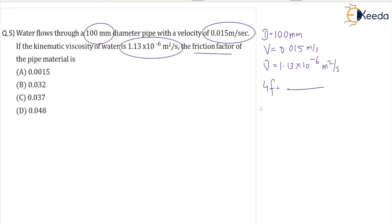First, we'll find the Reynolds number: Re = ρvd/μ. Since kinematic viscosity is given, we use Re = vd/ν. So velocity 0.015 × diameter 0.1 meters divided by kinematic viscosity 1.13 × 10^-6.